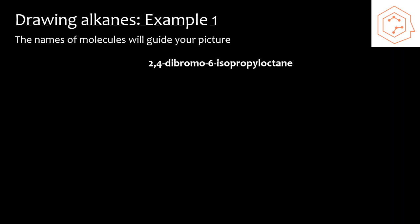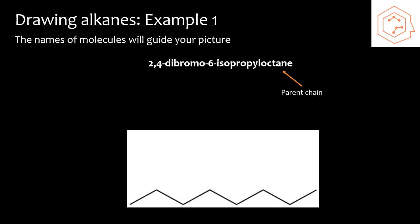Now I want to end on an example where we're asked to draw the alkane instead of naming it. We should let the name of the molecule guide us to how our final structure should look. Here I'm going to use 2,4-dibromo-6-isopropyloctane. First, let's identify what the parent chain is. It's given right at the end, so we know that there are going to be eight carbons in the parent chain. Our final structure for that part of the name will look something similar to what's at the bottom.